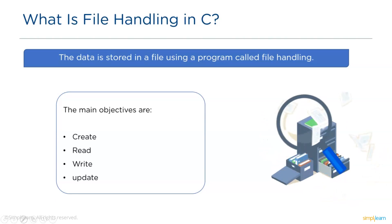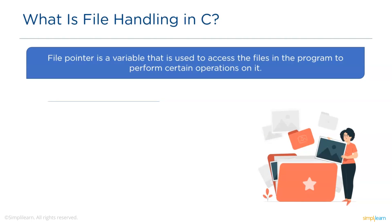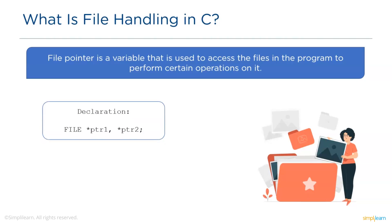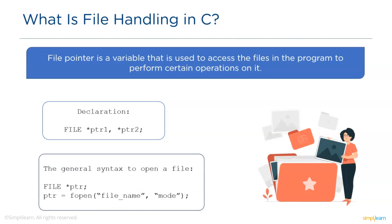In file handling, a file pointer is used to fetch and access the file in the program to perform operations on it. A file pointer is a variable used to reference the files in the program. In C programming we declare variables to hold a value — for example, int a, b — meaning variables a and b hold a value of type integer. Similarly, in file handling in C the declaration is FILE* followed by the file pointer name. FILE acts similar to a data type, meaning the file pointer variable is of type FILE. Every file is represented with a unique file pointer variable. The general syntax to open a file is FILE* followed by the file pointer name, then fopen with the filename and the mode assigned to the file pointer variable.